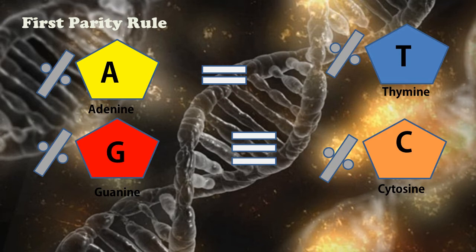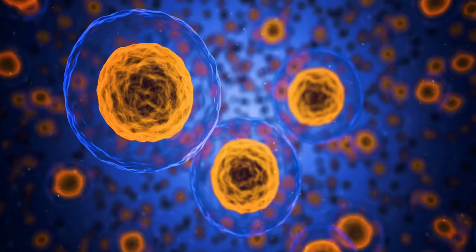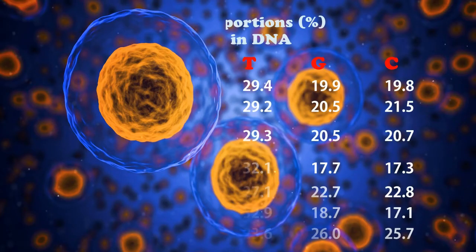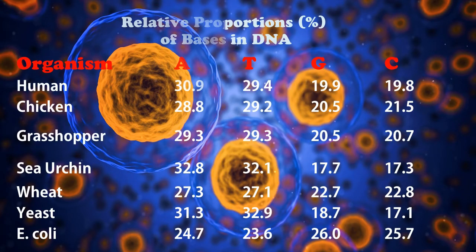This holds the first parity rule. The rigorous validation of this rule constitutes the basis of Watson-Crick base pairs in the DNA double helix model. Here I have given some organisms and their A, T, G, C content where you can see the difference between their contents. From different organisms, the percentage of A, T, G, and C differs according to their composition.